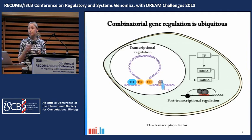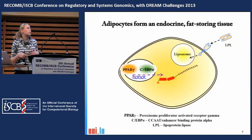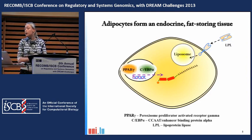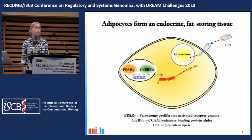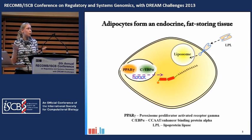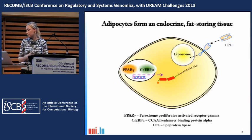Adipocytes form an endocrine organ — a fat-storing tissue. The main transcription factors driving differentiation and lipid accumulation are PPARγ and C/EBPα. PPARγ is absolutely necessary for adipogenesis; it binds many enhancers on the genome and induces expression of many genes. One such gene is lipoprotein lipase (LPL), essential for cells to accumulate fat. It's a secreted dimeric enzyme that catalyzes the breakdown of triglycerides into monomolecules that can be brought into cells and accumulated into lipid droplets.